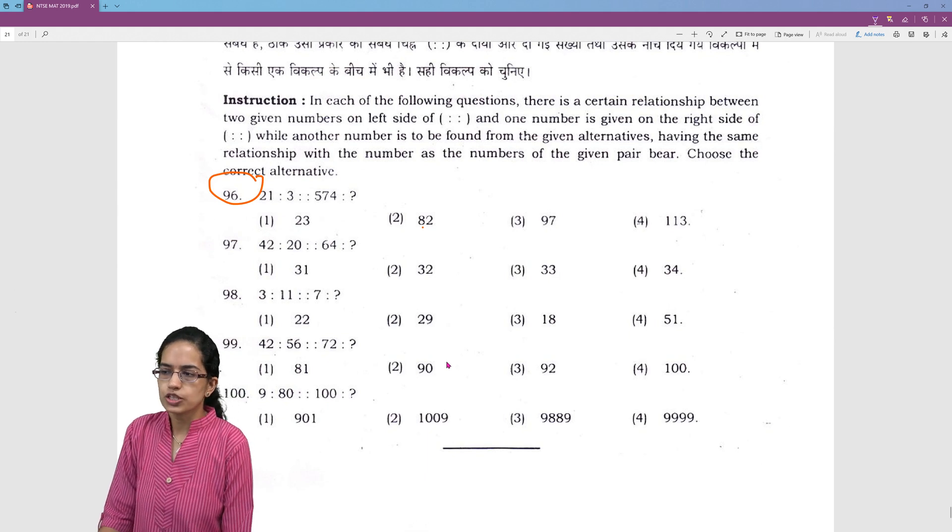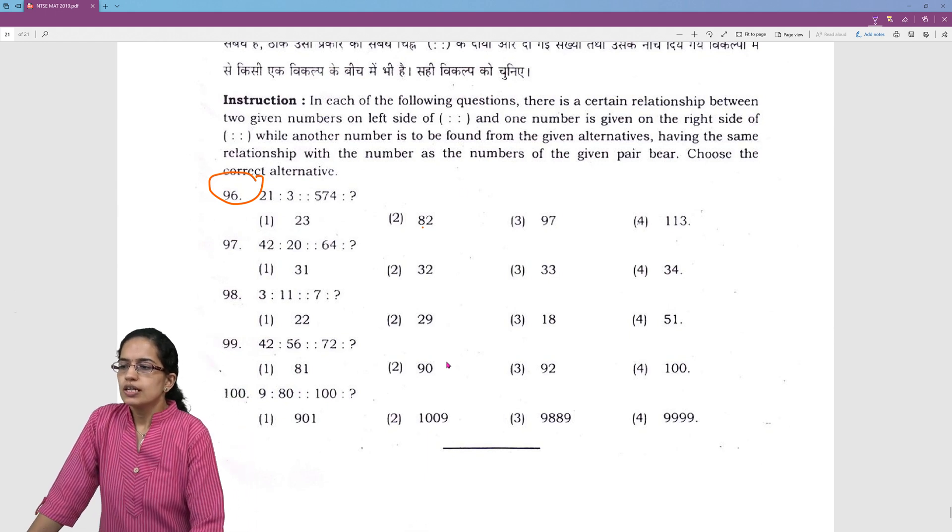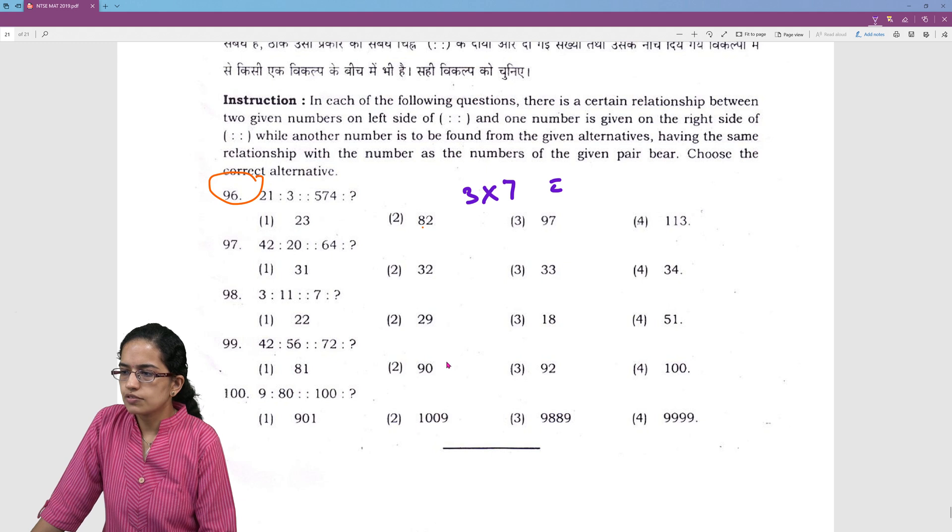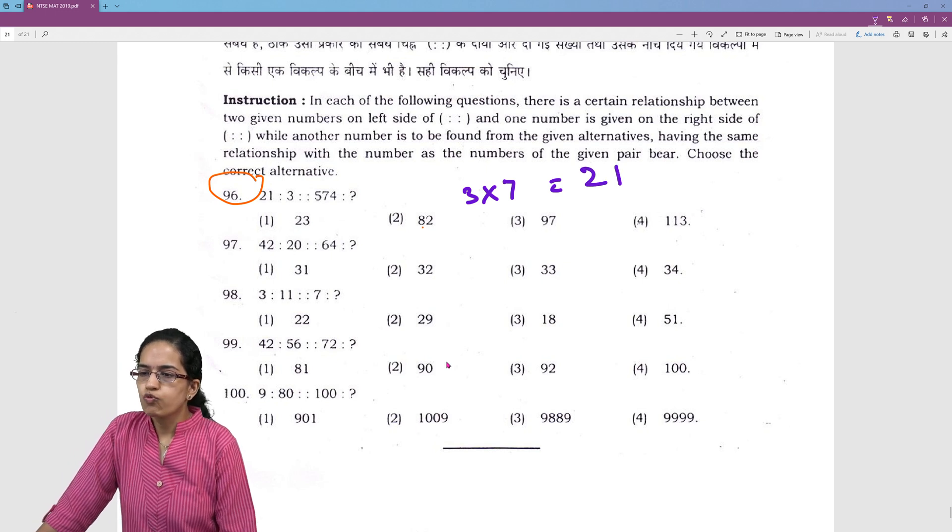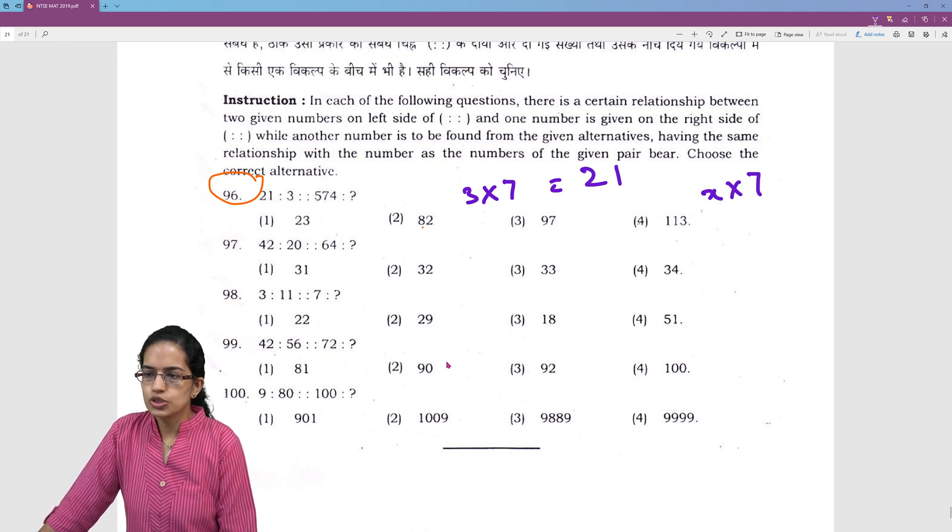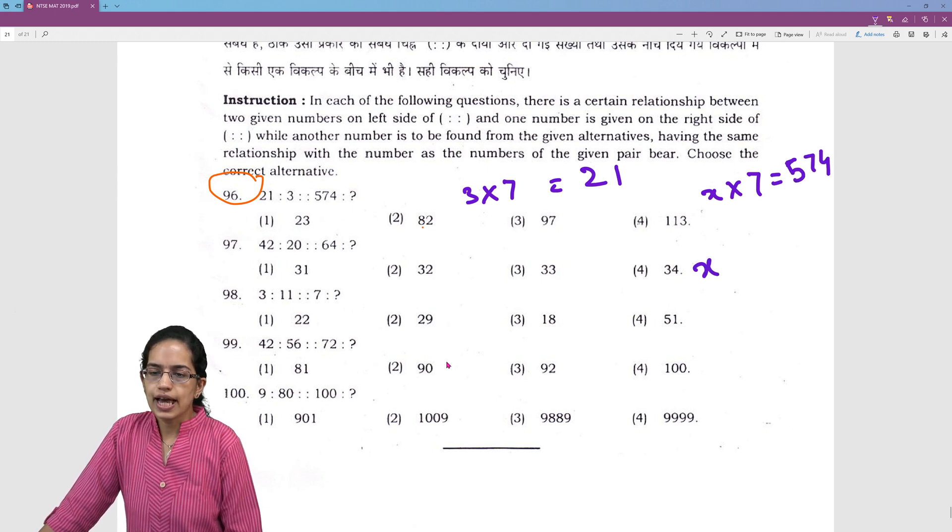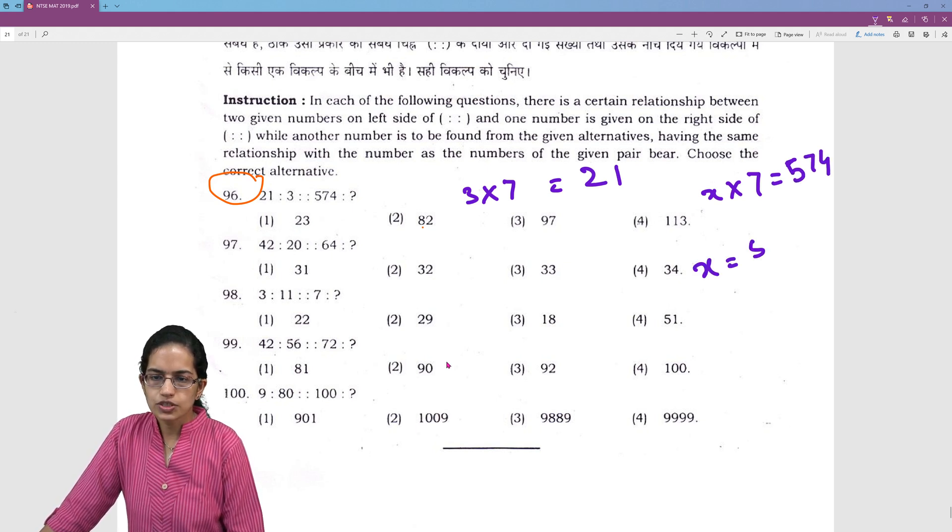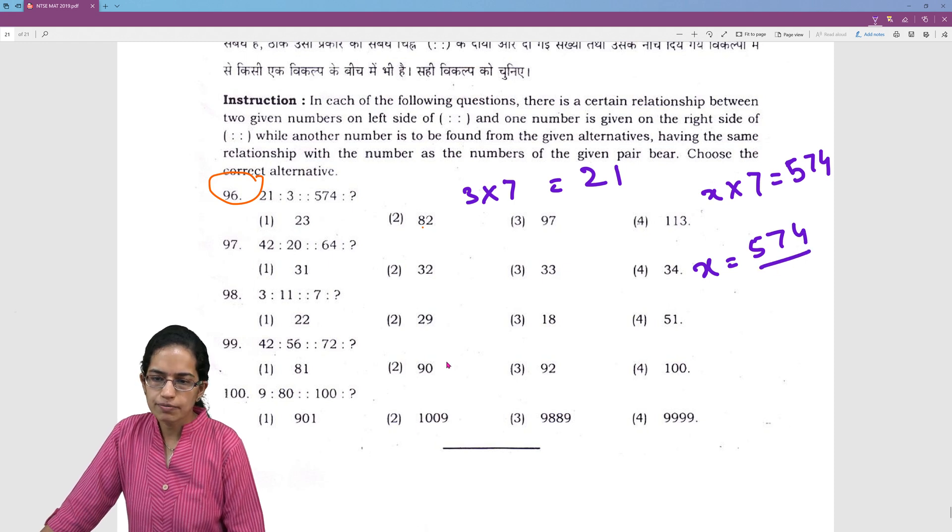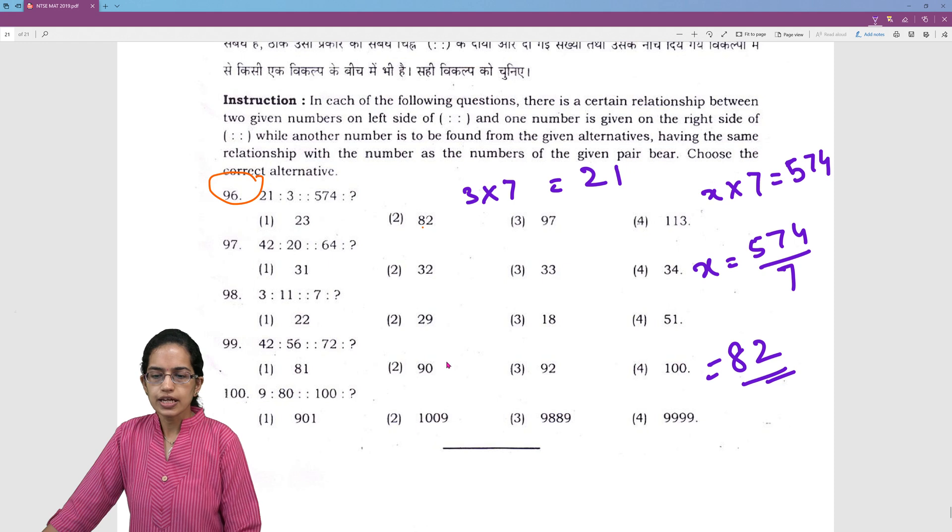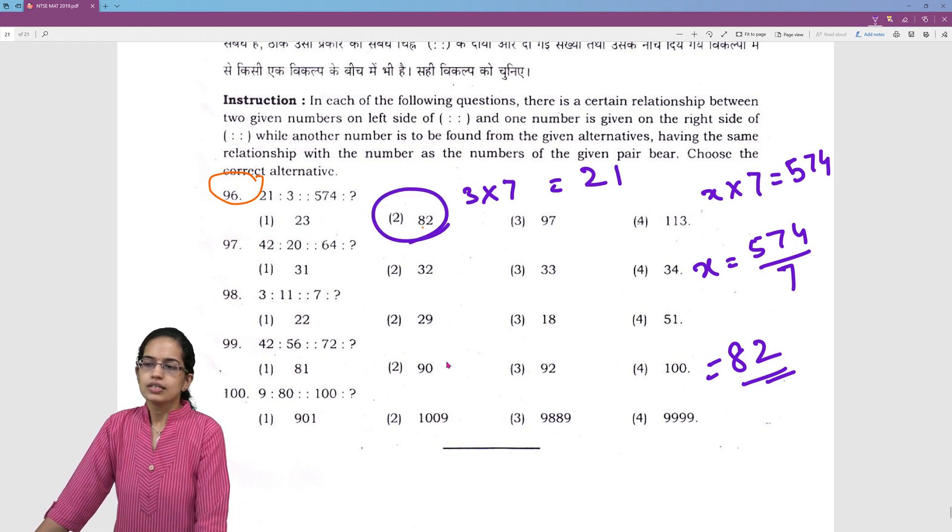And the last question is based on ratio and proportion. So, here, 3 into 7 gives me 21. So, what number X into 7 would give me 574? So, simply I'll find out X, which is 574 divided by 7. I'll calculate X and that would come up to 82. So, 82 becomes the right option.